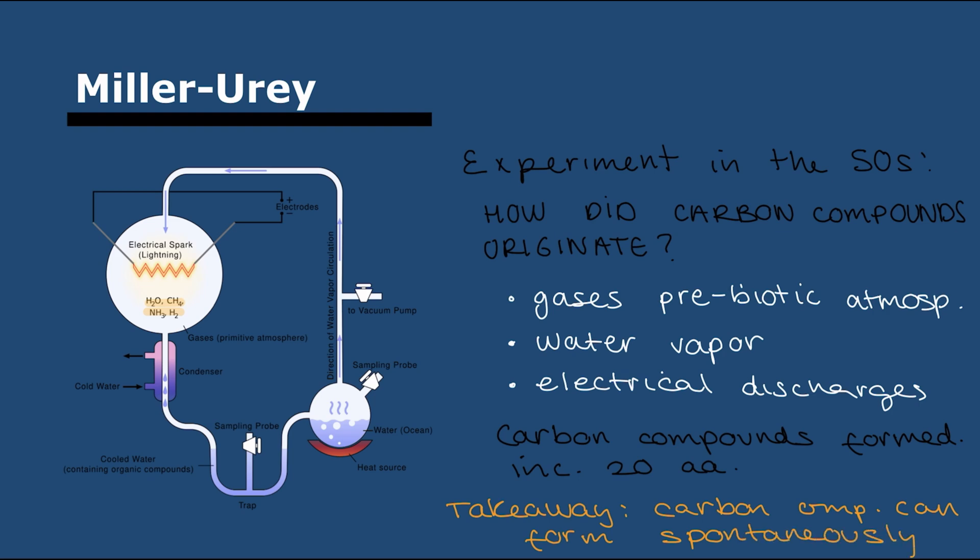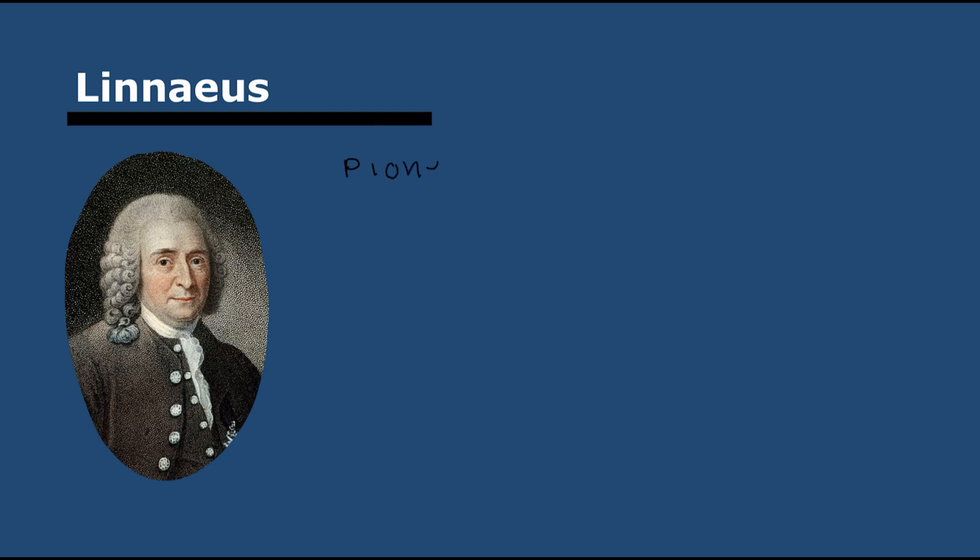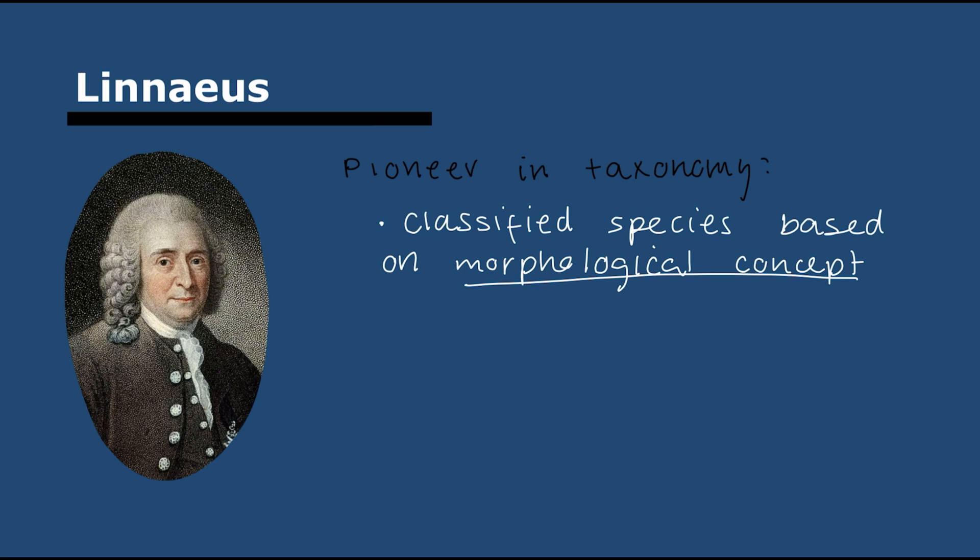Next up is Linnaeus. This one is super simple to understand. He was a pioneer in taxonomy, starting a lot of the classification systems that we now use. Most importantly, Linnaeus's classification for species was based on morphology—they looked at the outside and inside of animals or plants, just the structure, not the genes. This is not how we do things now.